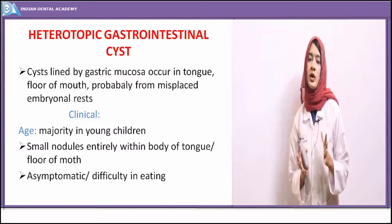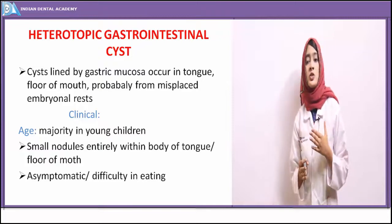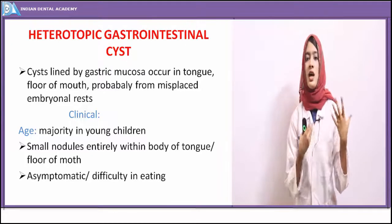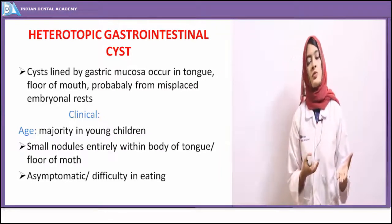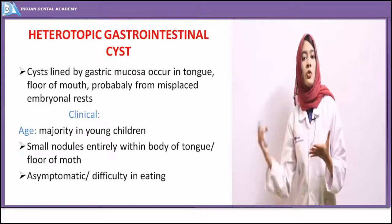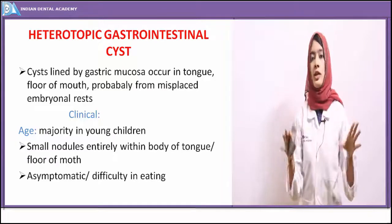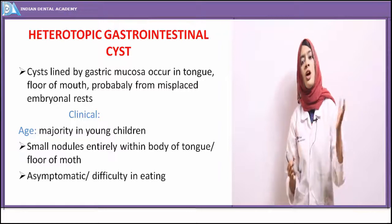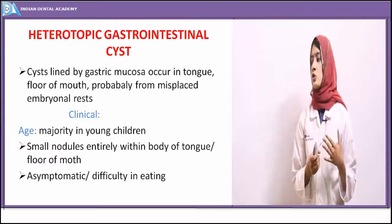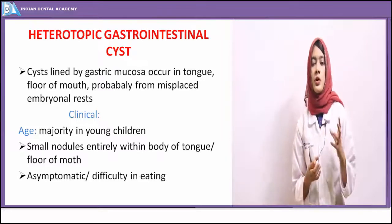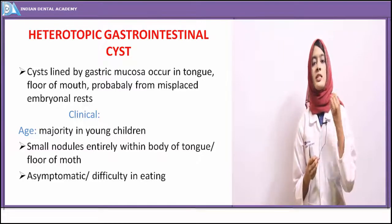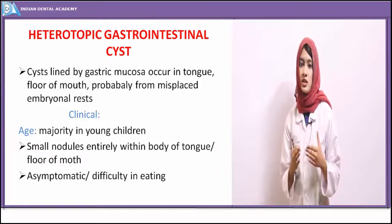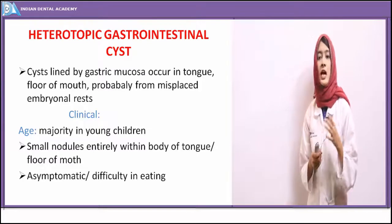The heterotopic gastrointestinal cyst is a relatively uncommon soft tissue cyst. It results from entrapment of gastric mucosa in other places. Normally gastric mucosa is seen in the stomach and intestines, but sometimes it may be seen in the oral mucosa, tongue, floor of the mouth, and other places where it is not normally expected. This forms a cyst lined by gastric mucosa, called the heterotopic gastrointestinal cyst, probably arising from misplaced embryonal rests during the embryonic period.